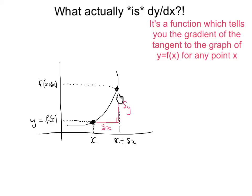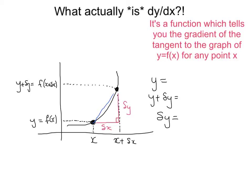If this height from one point to the other is delta y, then the upper point f of x plus delta x equals y plus delta y. What we do is work out what y plus delta y is, then subtract y from both sides to isolate delta y. We're doing this because we want to find the gradient of the chord — the blue line — which is delta y divided by delta x.